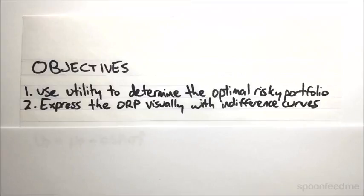So now we are going to have a look at how we can actually pick a specific single portfolio from the Efficient Frontier, using the concept of utility, which we borrow from economics, and then we are going to show how we can express this visually using what we call indifference curves.